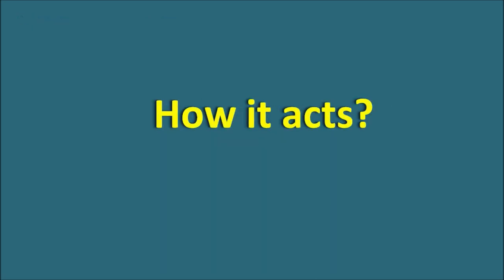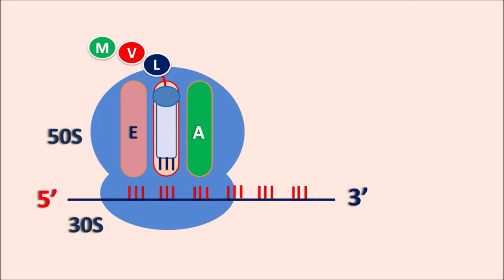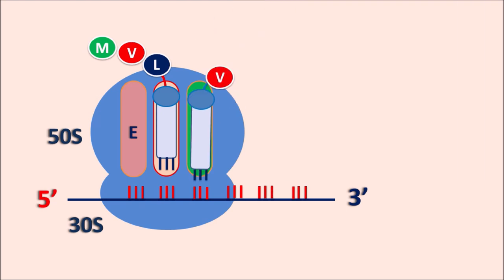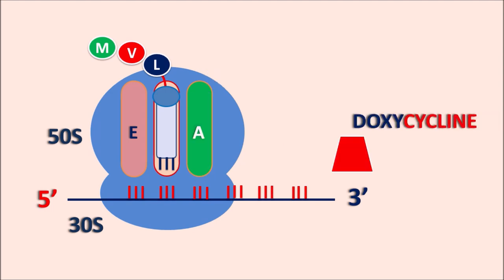Now let us see the mechanism of action of doxycycline. Doxycycline acts on protein synthesis within bacteria. Bacteria have ribosomes with 30S and 50S subunits. Normally, each amino acid in the peptide chain is supplied through tRNA. This aminoacyl tRNA binds to the A site according to the codon present on the mRNA, and once bound, it increases the length of the peptide chain, resulting in protein synthesis within the bacteria.